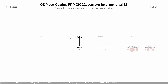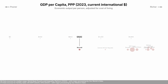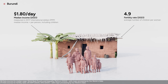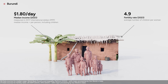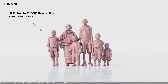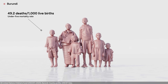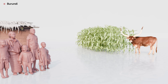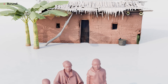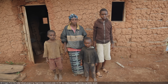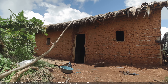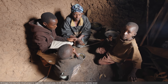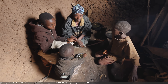The country with the lowest GDP per capita is Burundi. The median wage there is $1.80 per day. Each woman has an average of around 5 children. Child mortality is high, and 5% of children don't make it to 5 years old. Families are large, and most of them depend on agriculture to make a living. Most people live in rural areas, often in houses made with mud bricks.